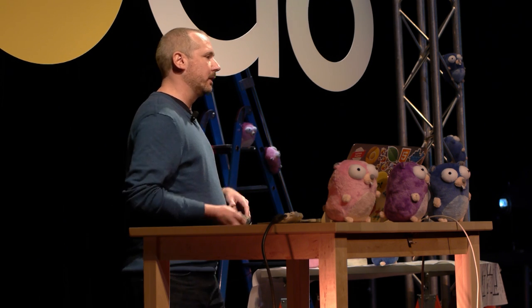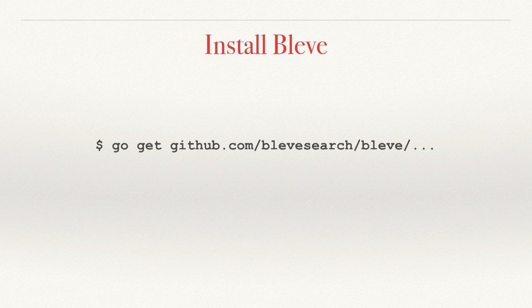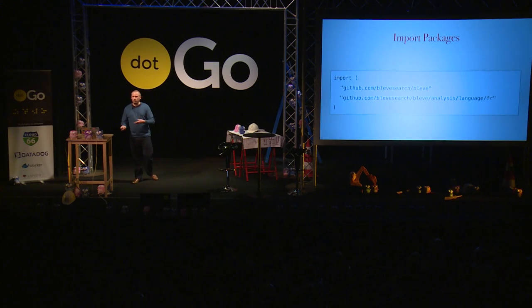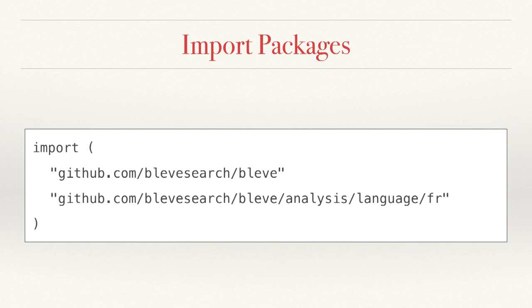And what we've done is build a project that lets you do exactly that using Go. To install the project, you're going to use the standard GoGet tooling. That's a really important feature for making sure your project is usable by the Go community. So let's go ahead and write some code that actually does the example we just saw. The first thing we're going to do is import the package — the first package is the standard Blovie package, and all Blovie programs are going to use that. The second one is because we know we're going to be indexing text that's in French.